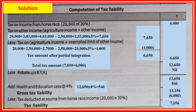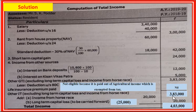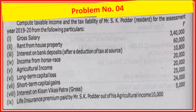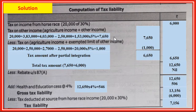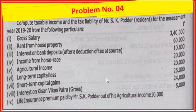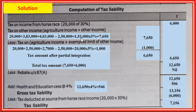Tax on other income: balance of income. So 4,03,000 minus 20,000 (horse race) equals 3,83,000. In step number one of partial integration, first we should include the balance income and agriculture income of 20,000. The total 4,03,000 less basic exemption limit 2,50,000 - since this is a non-senior citizen, 2,50,000 is exempt. Balance taxable: 1,53,000 at 5 percent tax equals 7,650.